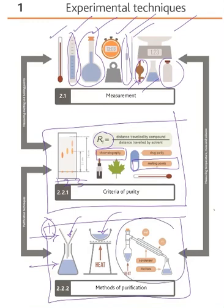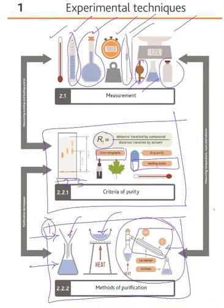In the last part we have distillation — simple distillation. Here we have the condenser, and the water always comes in from the lower side. The substance that has been distilled is called the distillate, and it is collected in this conical flask. Thank you for watching this mini session, and see you in the next session with a new topic and a new connection map.